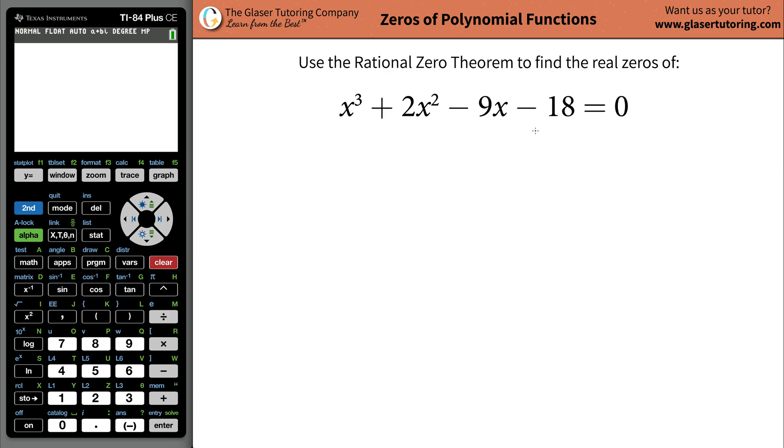Basically what it says is that if you find the factors of your constant term and you call those factors P, and you find the factors of the coefficient, or the leading coefficient, that is, of your highest power of x, call that Q, call those factors Q, and you take the factors P and divide it by Q. The resulting division will give you the possible real zeros.